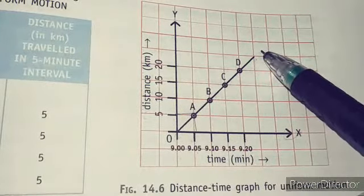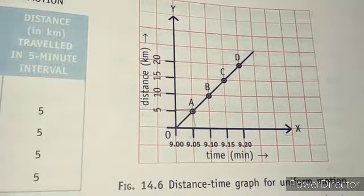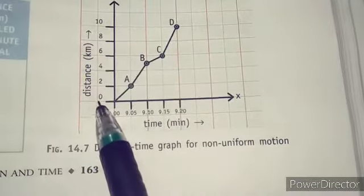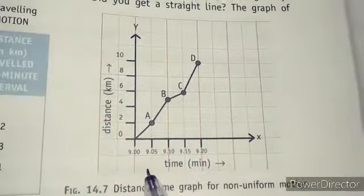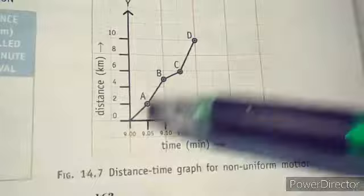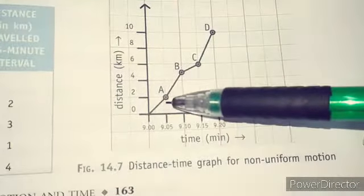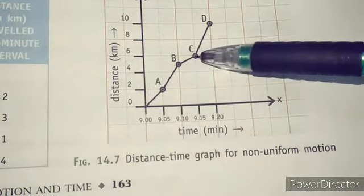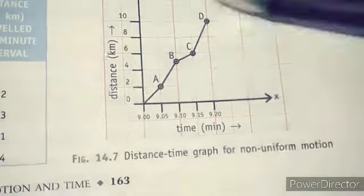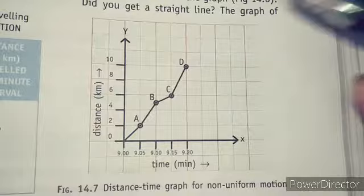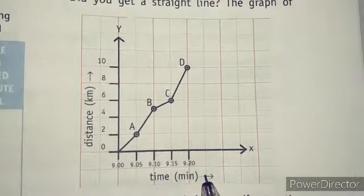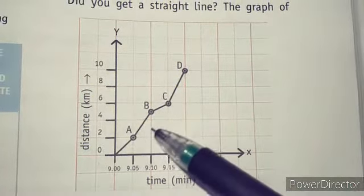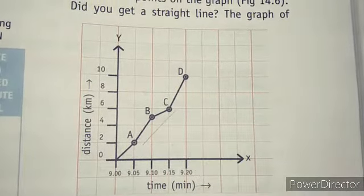If we talk about non-uniform motion, we do not have distance and time in proper dimensions. They are not fixed here. The distance goes to first 2 kilometers, then 4 point something, then 5 point something. Here distance is not in the fixed direction and the time is not equal for all levels. The graph we have is in zigzag motion, not in a straight line. That means it is non-uniform motion.